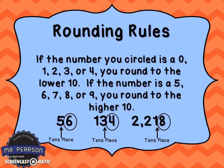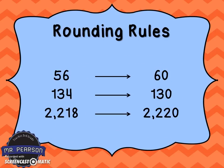If the number you circled is a 0, 1, 2, 3, or 4, you round to the lower 10. If the number is a 5, 6, 7, 8, or 9, then you're going to round up to the higher 10. So 56 — because we circled the 6, we're going to round that up to 60.